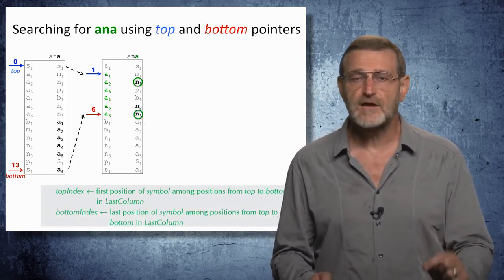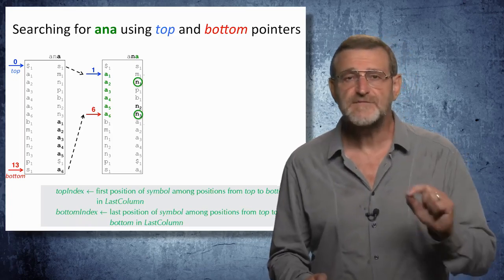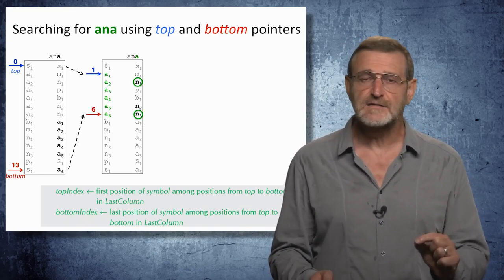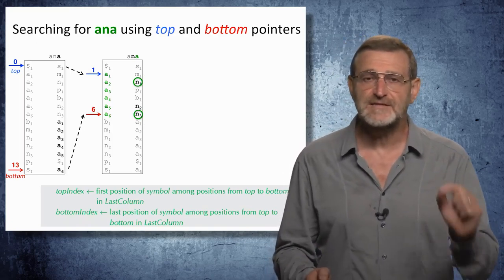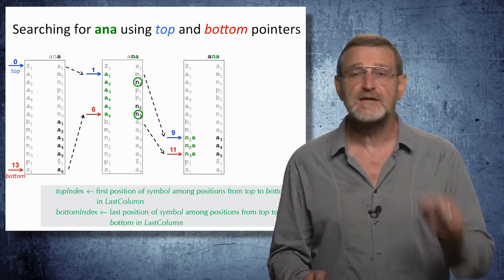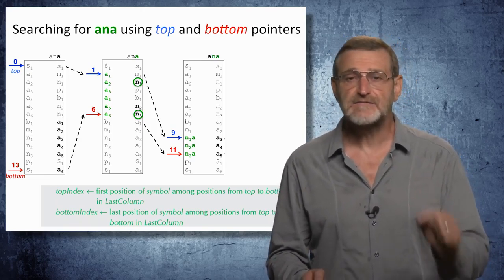And likewise, afterwards, we are looking for the last occurrence of this symbol. As soon as we found the first and last occurrence of this symbol, in this case N, the first-last property will tell us where these Ns and all Ns in between are hiding in the first column.